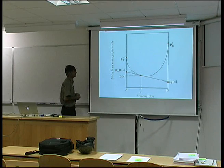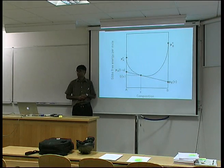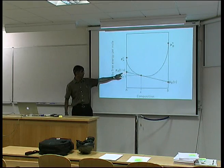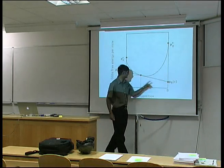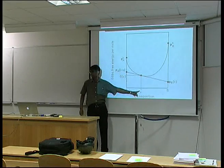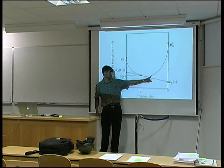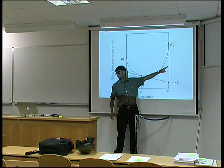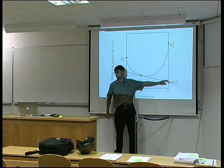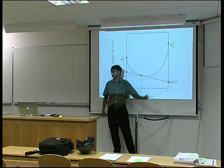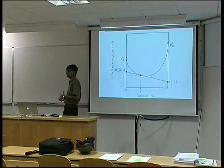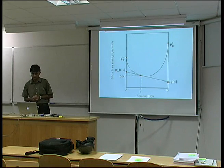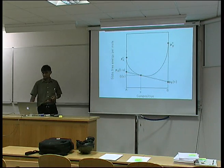In terms of a free energy curve, the chemical potential is simply given by the intercept at pure A and pure B for any given solution. And obviously if I have another concentration, then the chemical potential of B will be different, and therefore there will be a driving force for diffusion of B. So it's pretty straightforward to think in terms of chemical potentials instead of concentrations.